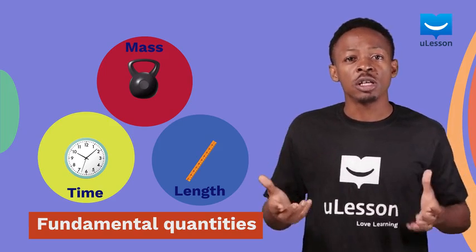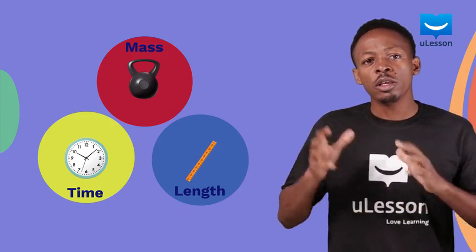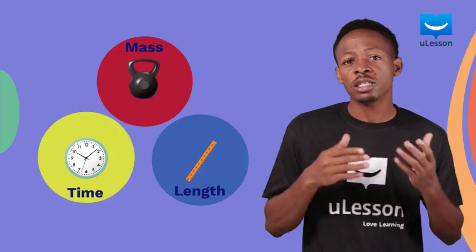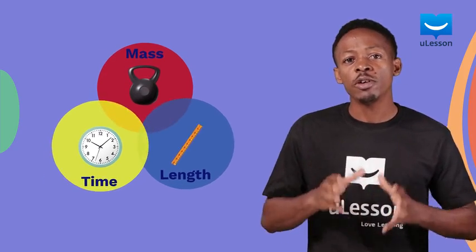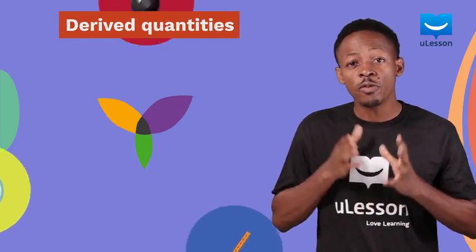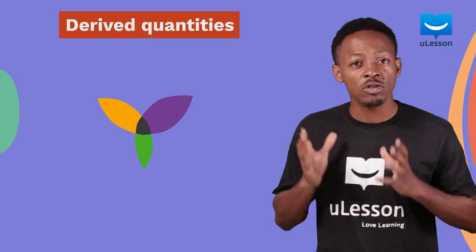All other quantities are made from a combination of these. On the other hand, derived quantities such as speed and acceleration are made of a combination of fundamental quantities. So to follow our analogy, these derived quantities are the secondary colors.